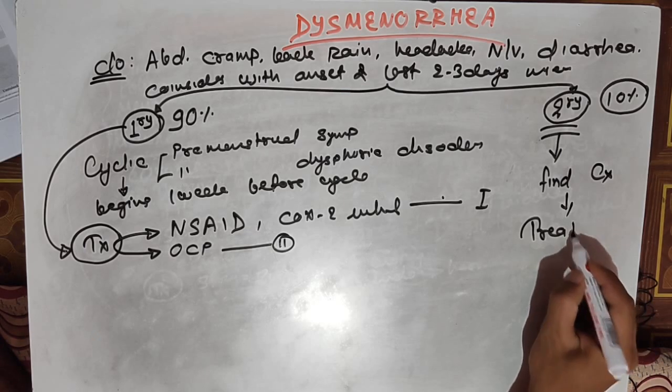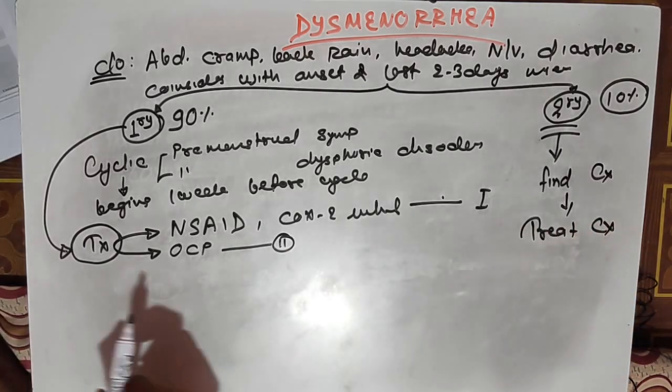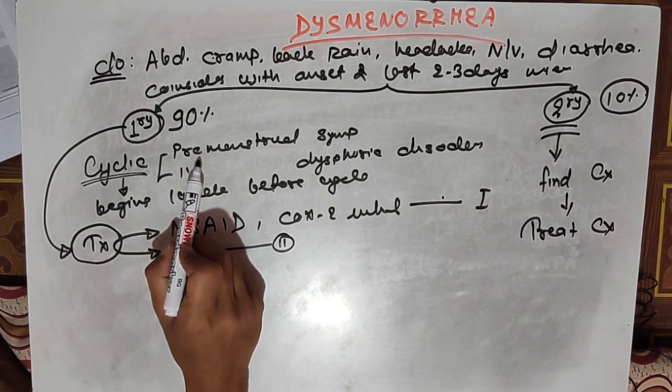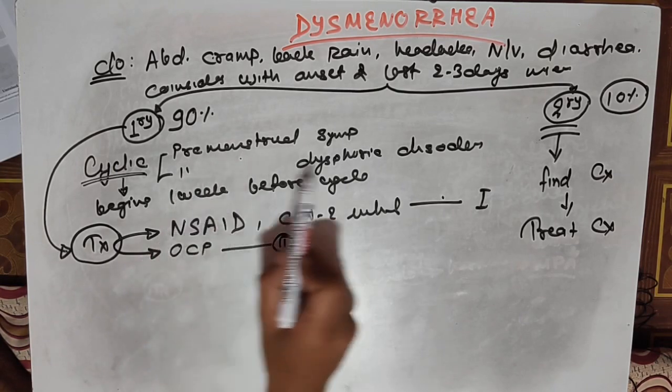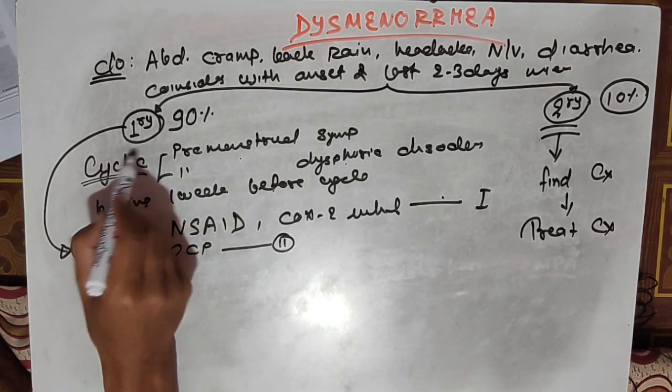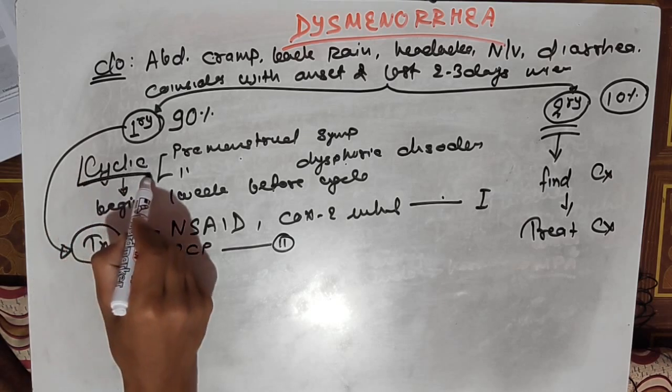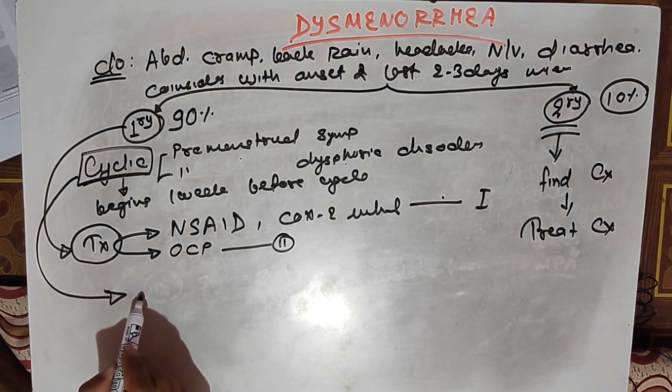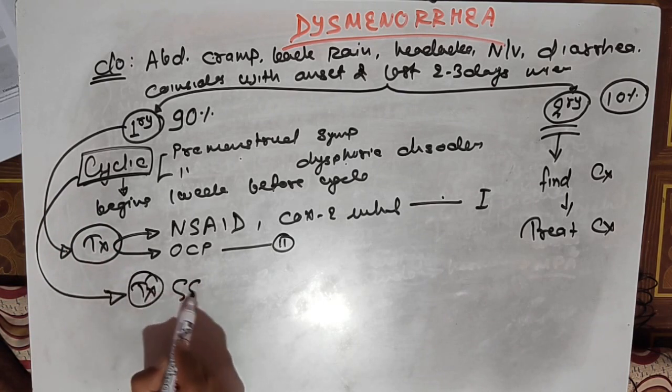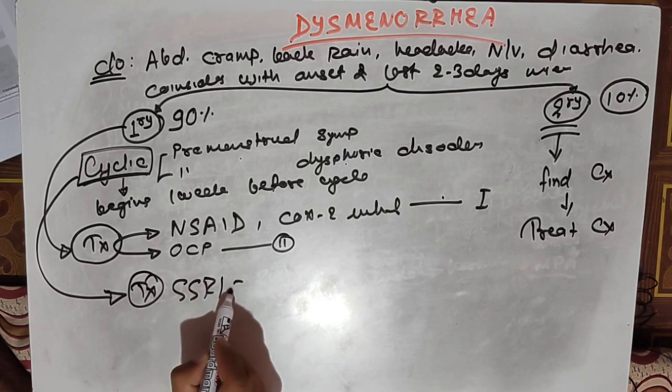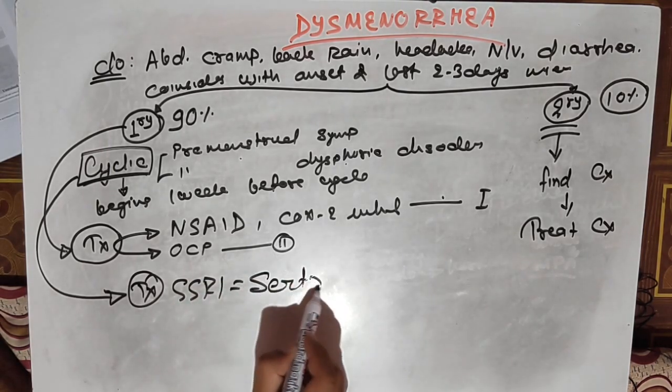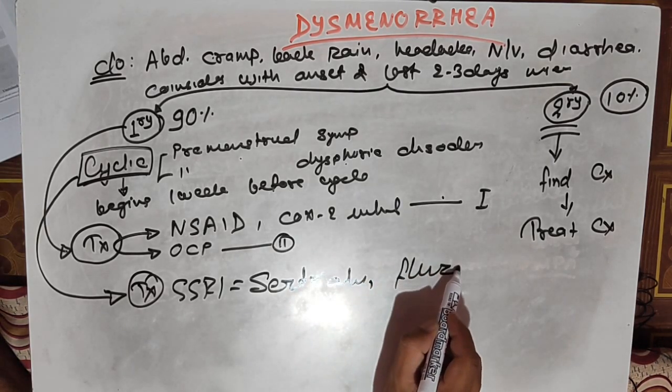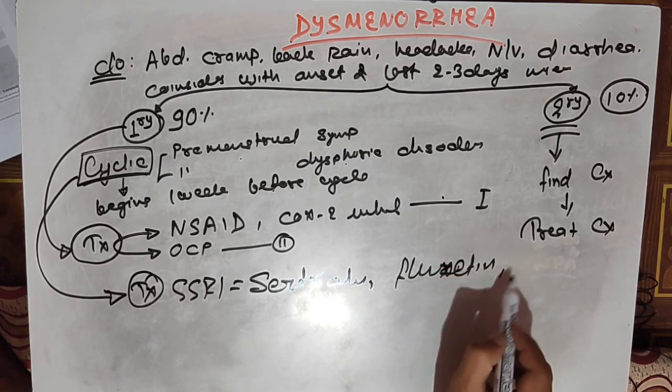For the depressive illness known as premenstrual symptoms or premenstrual dysphoric disorder, these depressive-type symptoms can be treated with antidepressants like SSRIs, such as sertraline, fluoxetine, or paroxetine.